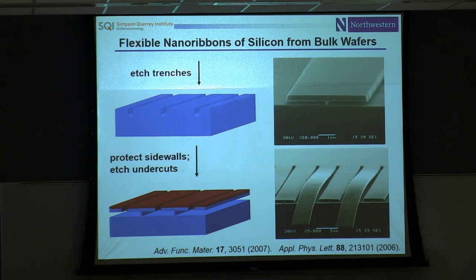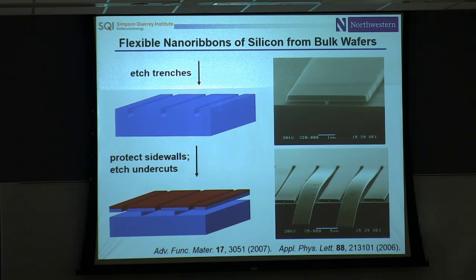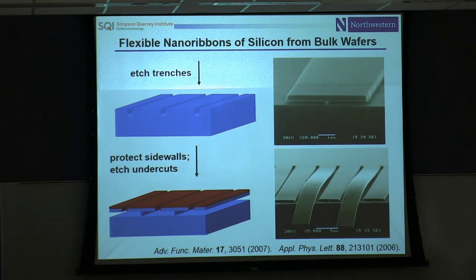Those are two basic ideas in mechanics that make nanoscale forms of materials like silicon or gallium arsenide interesting in the broader context of biointegration. The next question is: if that's what you want from a mechanics standpoint, how do you create the material elements in the first place? One way is to develop new growth techniques for silicon—there's been a lot of work in silicon nanowires. But the silicon wafer itself is a commodity material, very sophisticated yet low cost, driven there by the huge consumer electronics industry. Using that as a starting point might be an alternative approach.